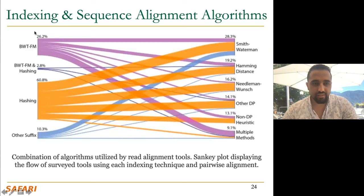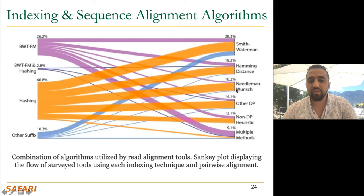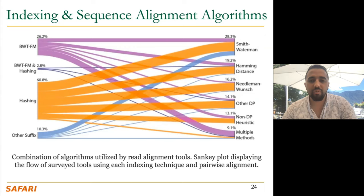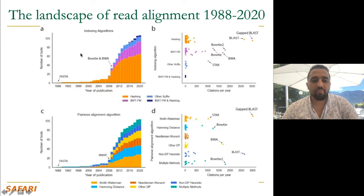We show a lot of figures about this. On the left side you can see the type of indexing, and on the right side the type of sequence alignment methods. You can see hashing was the most popular one. For sequence alignment methods, we still see all types of sequence aligners including Smith-Waterman, and even Hamming distance which does not calculate indels. You can also see other heuristic-based methods such as sparse DP and so on.